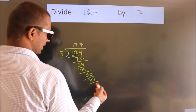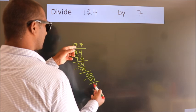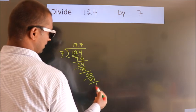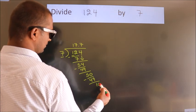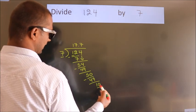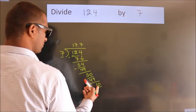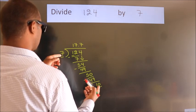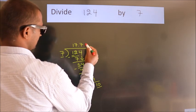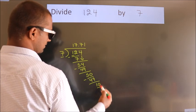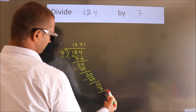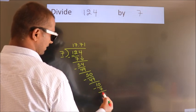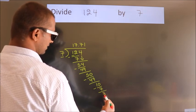After this, we already have the decimal, so we directly take 0, giving us 10. A number close to 10 in the 7 times table is 7 once, which is 7. Now we subtract and we get 3.